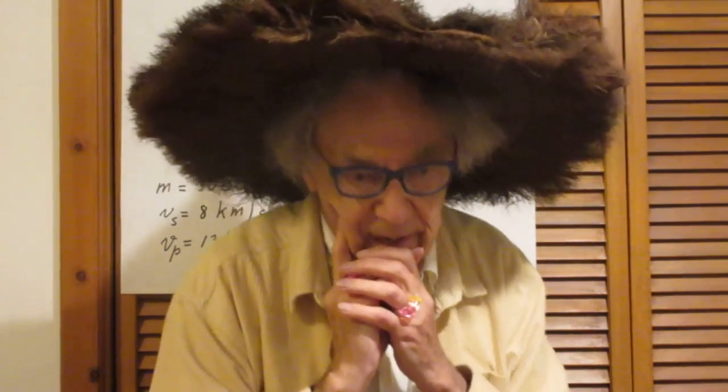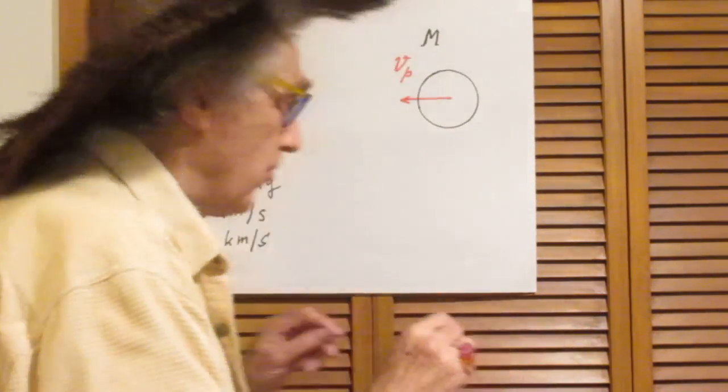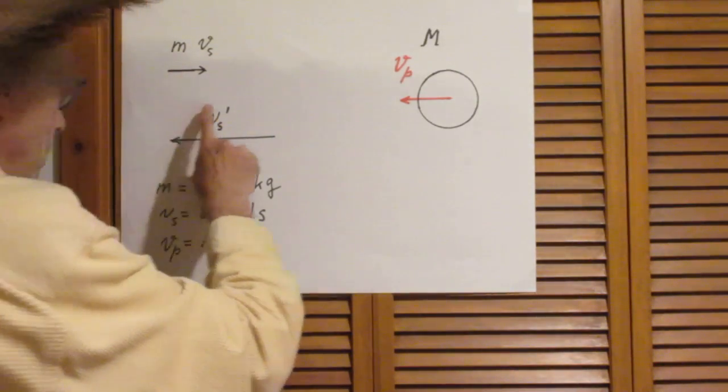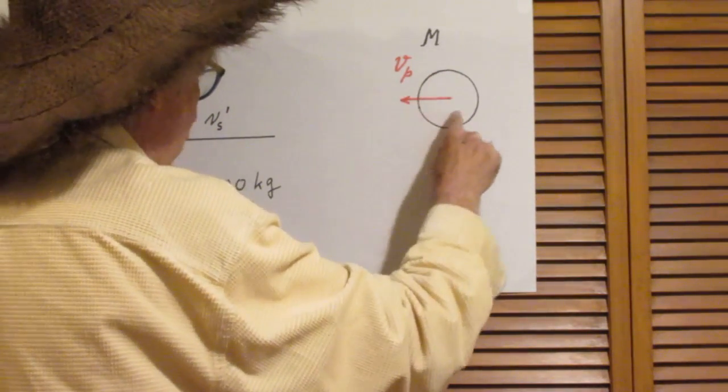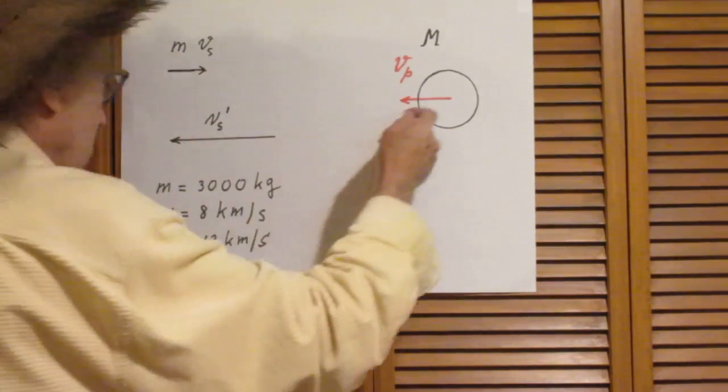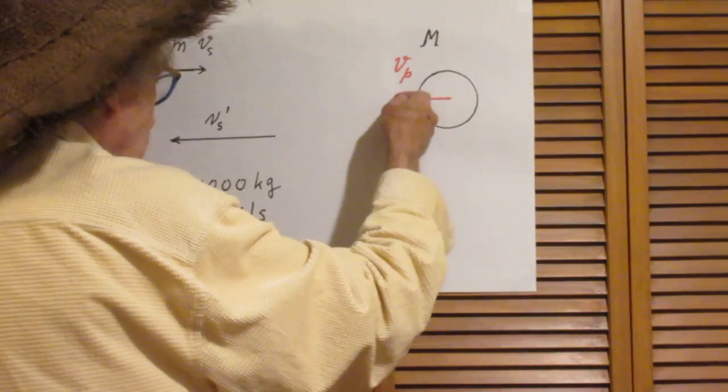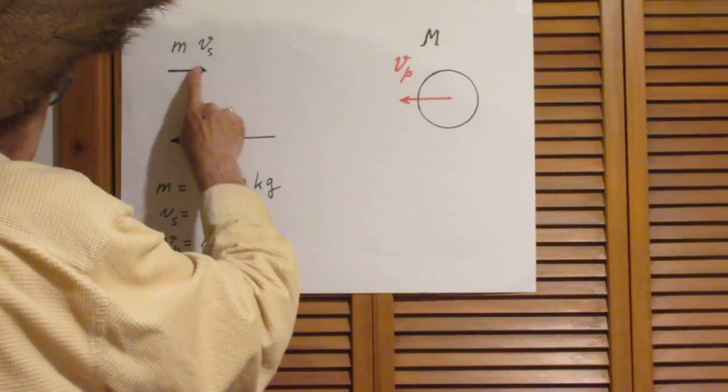So now comes the question, how on earth can you do this problem? Well, without proving it, the answer that you will get—namely we want to know what Vs prime is, we want to know the gain in speed—you can treat this as if it were a one-dimensional purely elastic collision. So the mass bounces off this very massive object and bounces back, but since the massive object is moving in this direction, this speed will be higher than that speed.